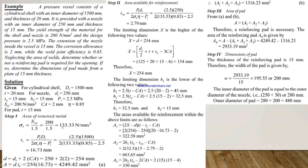In step 1, we calculate the area of removed metal. First we calculate σT = yield strength / factor of safety = 200 / 1.5 = 133.33 N/mm². Then we calculate the required thickness TR = P·Di / (2·σT·η − P), and substituting all values we get TR = 60.73 mm.